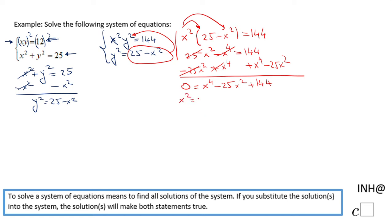I will say x squared equals m, which means x to the fourth power, which is x squared raised to the second power, will be m squared.